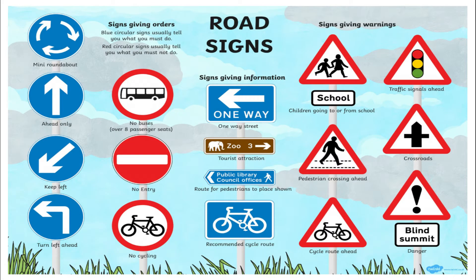This picture shows examples of rectangular, circular, and triangular shapes. On the left hand side we've got the signs that give orders, and they are all in circular shape. The top one is the mini roundabout. The one underneath means going ahead only. The third one means keep left — if you approach a road you have to keep to the left lane. The final one means turn left ahead. The circular shapes with a red sign also give mandatory orders, like no buses allowed, no entry, and no cycling.